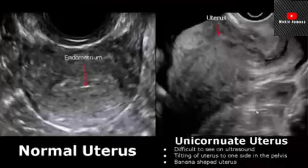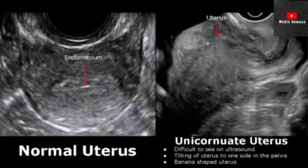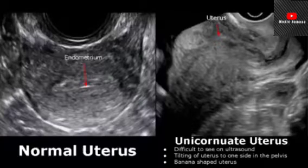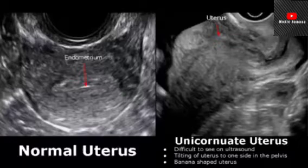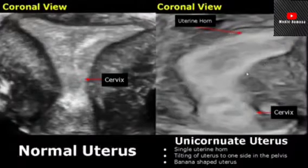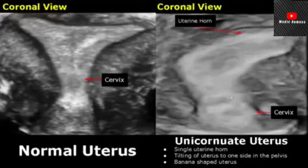A unicornuate uterus has only one uterine horn connected to a single fallopian tube. It is difficult to see on 2D ultrasound — we may see tilting of the uterus to one side in the pelvis. A unicornuate uterus has a banana shape and is seen very well in a 3D coronal image, where only a single uterine horn is found, tilted to one side.